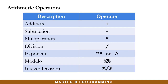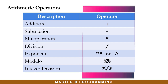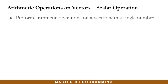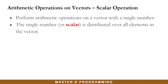In one of our previous lessons, we learned about the arithmetic operators and their associated symbols for performing calculations in R, as is shown on the screen. Now we look at how to perform what we call scalar operations on vectors — that is, we perform arithmetic operations on a vector with a single number. This single number, which is called a scalar, is applied over each element in the vector in an arithmetic operation.